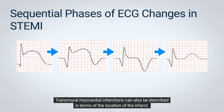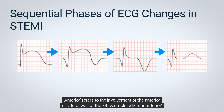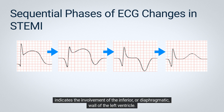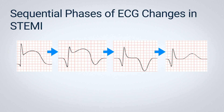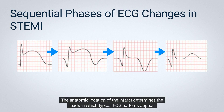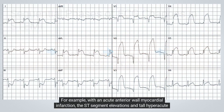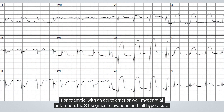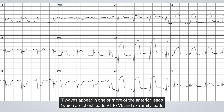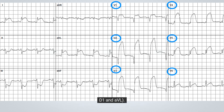Transmural myocardial infarctions can also be described in terms of the location of the infarct. Anterior refers to involvement of the anterior or lateral wall of the left ventricle, whereas inferior indicates involvement of the inferior or diaphragmatic wall. The anatomic location determines the leads in which typical ECG patterns appear. With an acute anterior wall myocardial infarction, ST-segment elevations and tall hyperacute T waves appear in the anterior leads: chest leads V1 to V6 and extremity leads D1 and aVL.